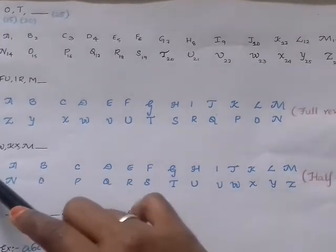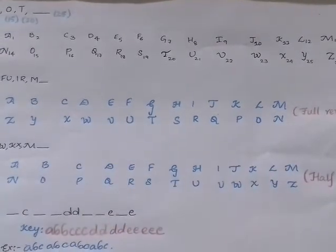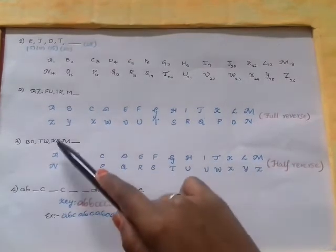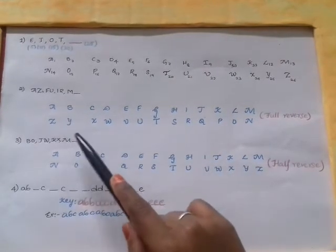So the question resembles half reverse pairs and we need to find the pair of M and it is none other than Z. So the missing letter is Z.